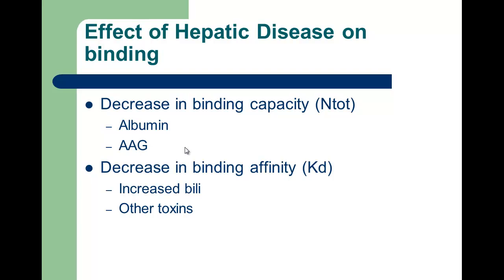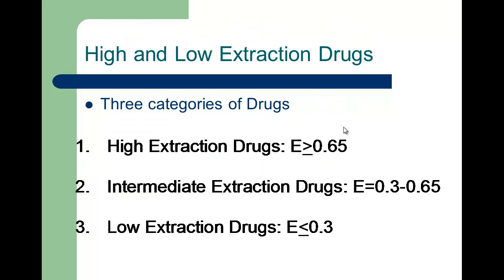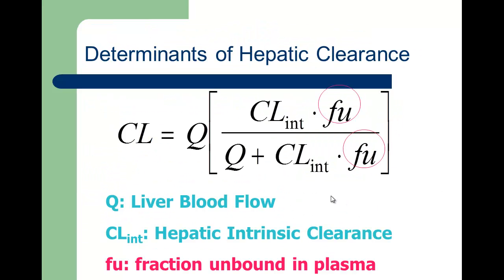High and low extraction drugs: high extraction drugs have an extraction efficiency E greater than or equal to 0.65; low extraction drugs are around less than 0.3, with E ranging between 0 and 1. Intermediate drugs fall in between. For high or low extraction drugs, we can make simplifying assumptions to make more manageable predictions, whereas intermediate drugs require the full equation.